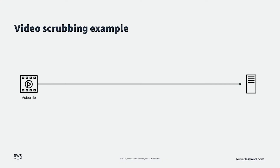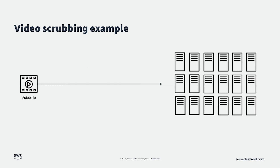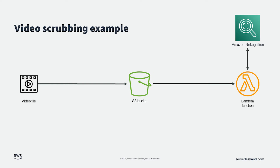Let's look at an example to make this clear. Let's say I have video files that need to be analyzed for sensitive data. I could upload these to a server somewhere and process the files synchronously in memory. However, I would need a fleet of servers to make sure it is always available, and I risk losing the data if something goes wrong. Instead, I can upload the file directly to Amazon S3 and configure the bucket to invoke a Lambda function when new files are uploaded. Once the new file is uploaded, the Lambda function is invoked with an event containing the bucket and the key name from S3.